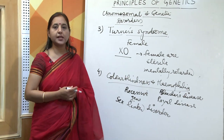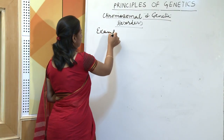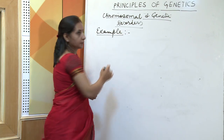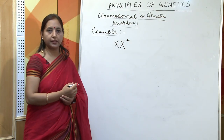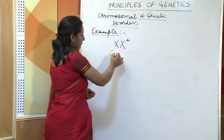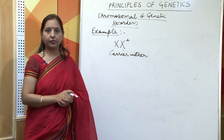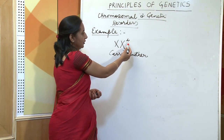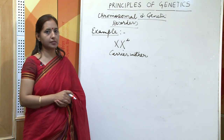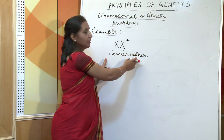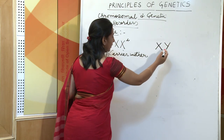We can understand this with the help of a simple example. This is a carrier mother. A carrier mother means the mother does not suffer from color blindness but carries the recessive gene. Since the gene is not able to express itself, the disorder remains hidden or masked, and this female is called a carrier mother. If this carrier mother marries a normal man, let us see what the progeny is like.